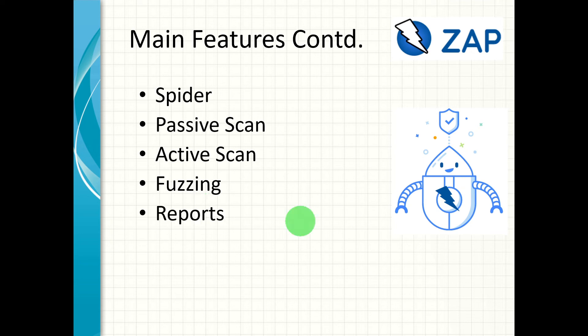The next main feature is reports. ZAP can generate reports on the issues found, including advice and links to more details about the problems and how to solve them.